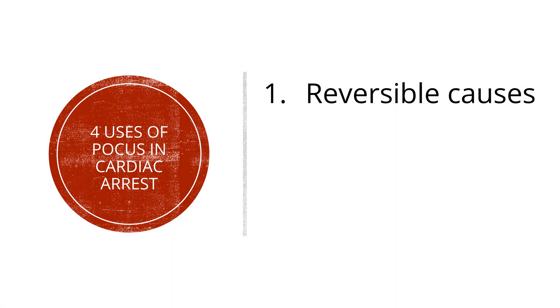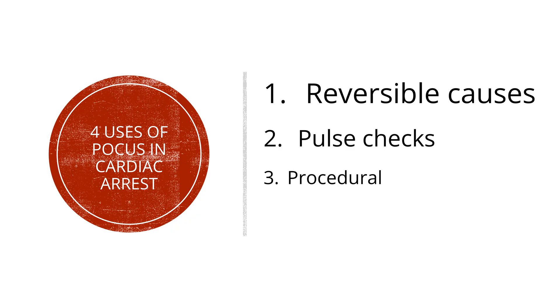Let's start with the four uses of POCUS in cardiac arrest, listed here in order from the most supporting evidence to the least. Number one: reversible causes. Number two: pulse checks. Number three: procedural guidance. And number four: prognosis.